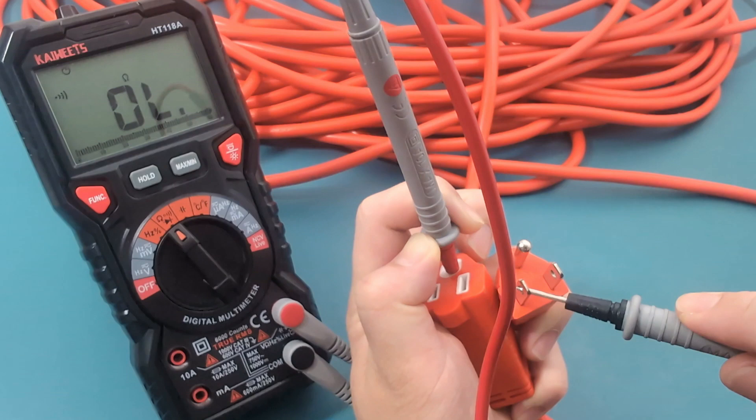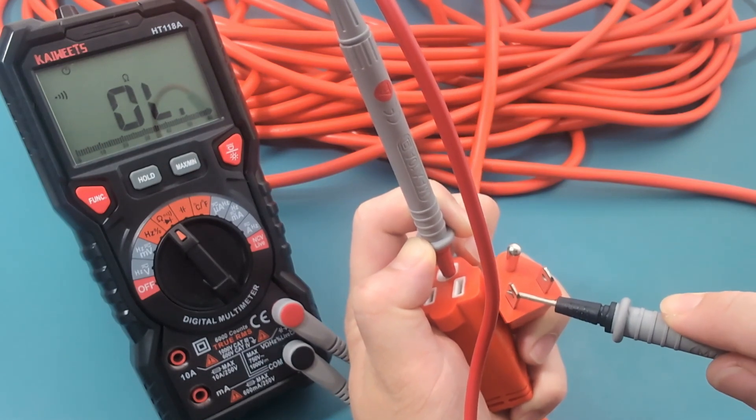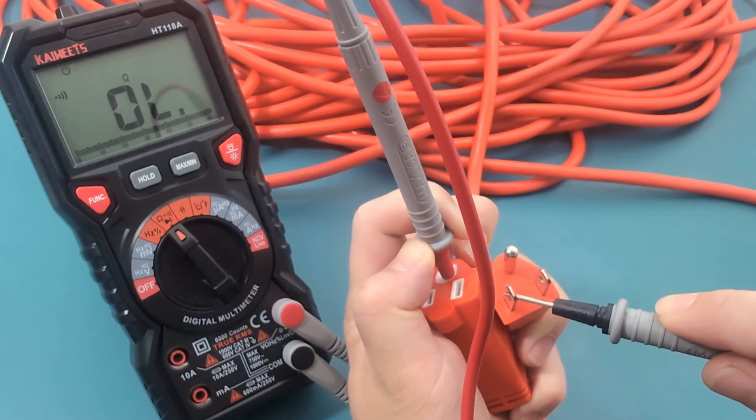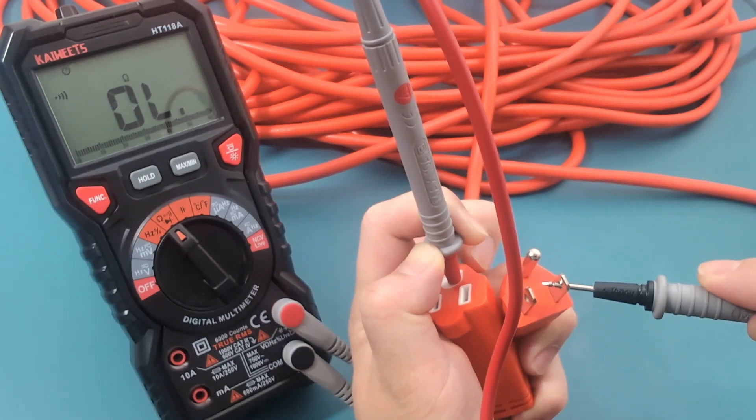There should be no continuity or resistance when you connect the ground terminal to the other terminals. If you have continuity or resistance, it means the extension cord is bad.